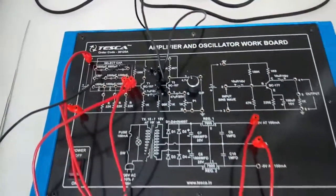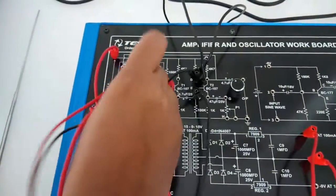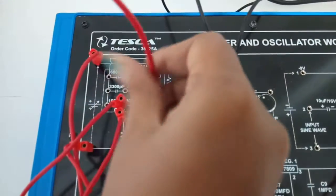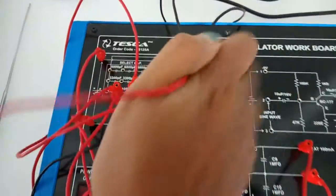Now we will connect the capacitor with the resistor. I am taking a 1000 picofarad capacitor, so connect the capacitor with resistor as shown in the dotted line.